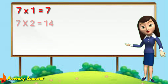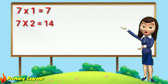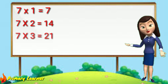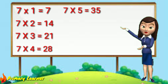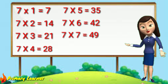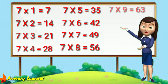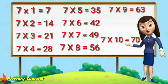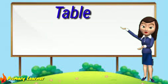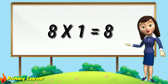7 ones are seven, 7 twos are fourteen, 7 threes are twenty-one, 7 fours are twenty-eight, 7 fives are thirty-five, 7 sixes are forty-two, 7 sevens are forty-nine, 7 eights are fifty-six, 7 nines are sixty-three, 7 tens are seventy.